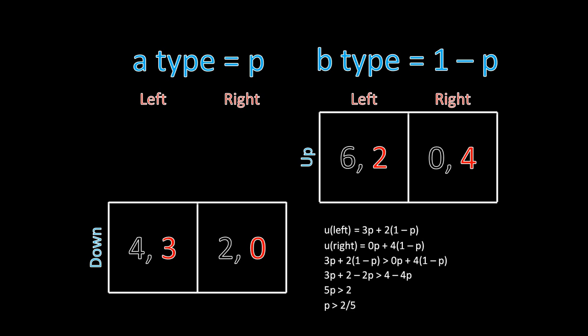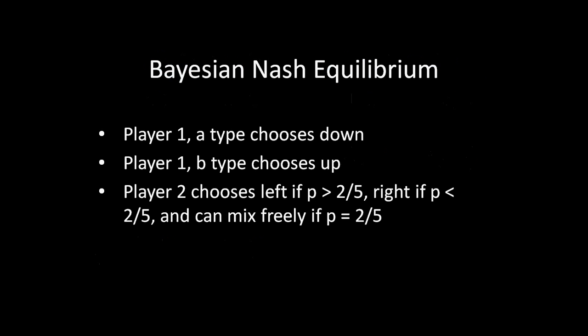So overall, the Bayesian Nash Equilibrium of this game is as follows: player one as the A type chooses down, player one as the B type chooses up, and player two chooses left if P is greater than two-fifths, right if P is less than two-fifths, and can mix freely when P is exactly equal to two-fifths.